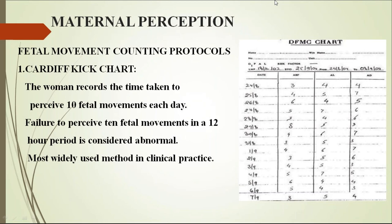For maternal perception counseling, fetal movement counting protocols use the DFMC chart — Daily Fetal Movement Count chart. You give this chart to the mother and advise her to count movements three times per day: after breakfast, after lunch, and after dinner. She should lie down in the left lateral position for one hour and count the movements. At least three movements per hour is adequate. Alternatively, you can ask the mother to count 10 movements within a 12-hour period.